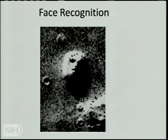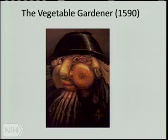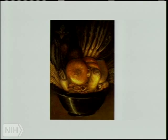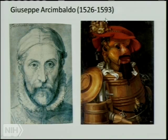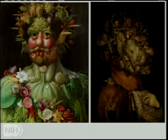Face recognition: there's a famous picture from the Mars orbiter that people thought showed a face on Mars — we're really good at recognizing faces. Here's a bowl of vegetables that, turned upside down, you can't help but see as a person — the Vegetable Gardener, painted in 1590 by Giuseppe Arcimboldo. He also painted 'The Waiter,' made out of a tankard and bottles, and 'Vertumnus,' apparently a portrait of Emperor Rudolf. We can't help but see faces in all of these.